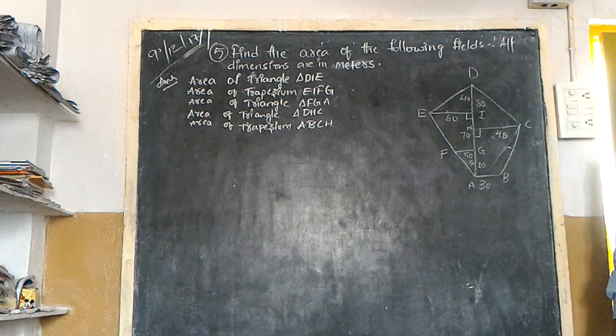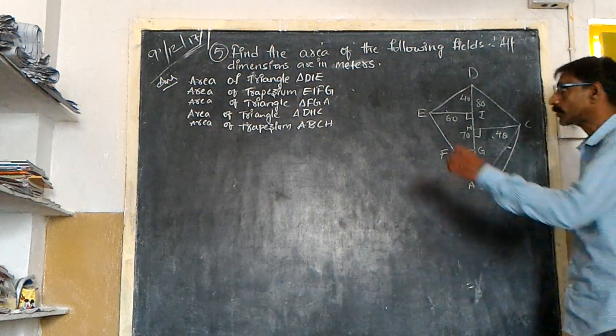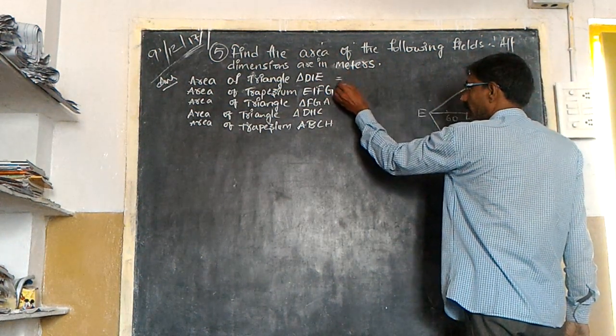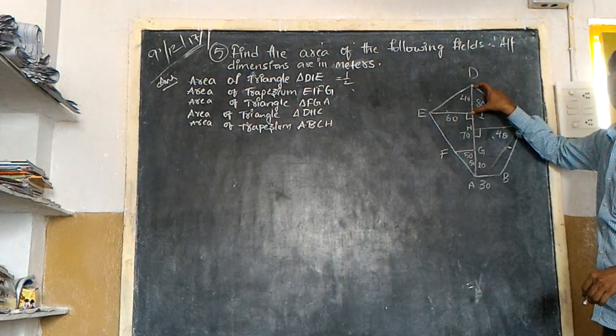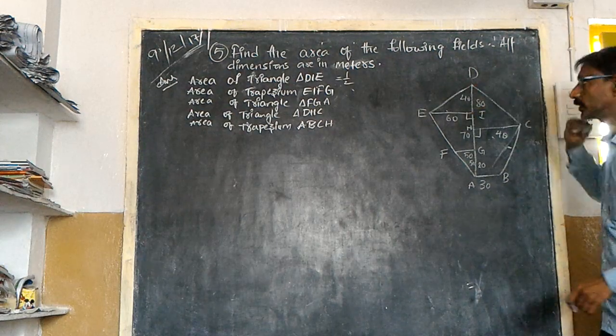Area formula of triangle is half base into height, right? So I will take half. My base is 60 and height is 40. Isn't it?